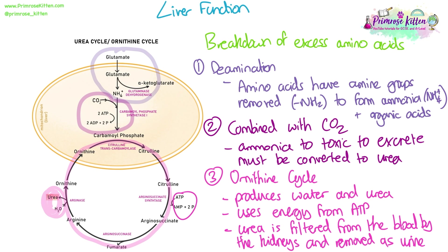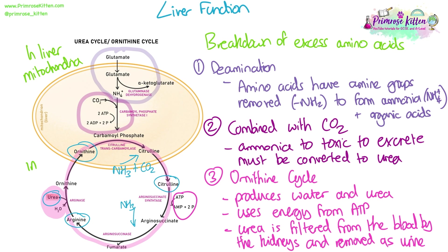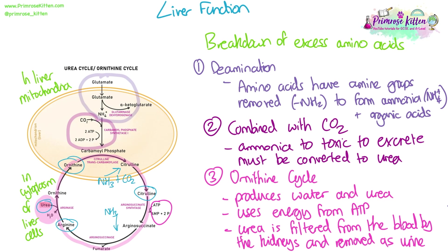The main points of the ornithine cycle to know: ornithine is converted into citrulline using ammonia and carbon dioxide. Citrulline is then converted into arginine using another ammonia molecule. Arginine is then converted back to ornithine by removing urea. The majority of the cycle stages happen in the cytoplasm, but the first part — the deamination and the combining of ammonia and carbon dioxide — happens in the mitochondria of liver cells. To summarise: ammonia and carbon dioxide are used to produce urea and water.